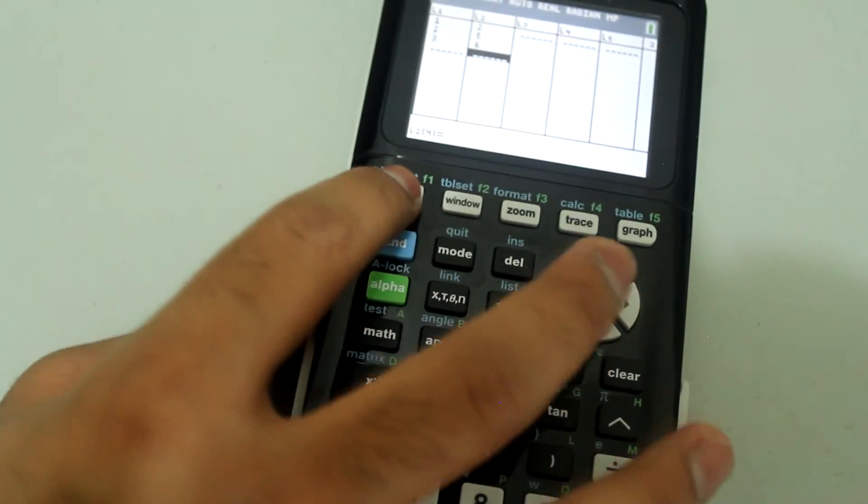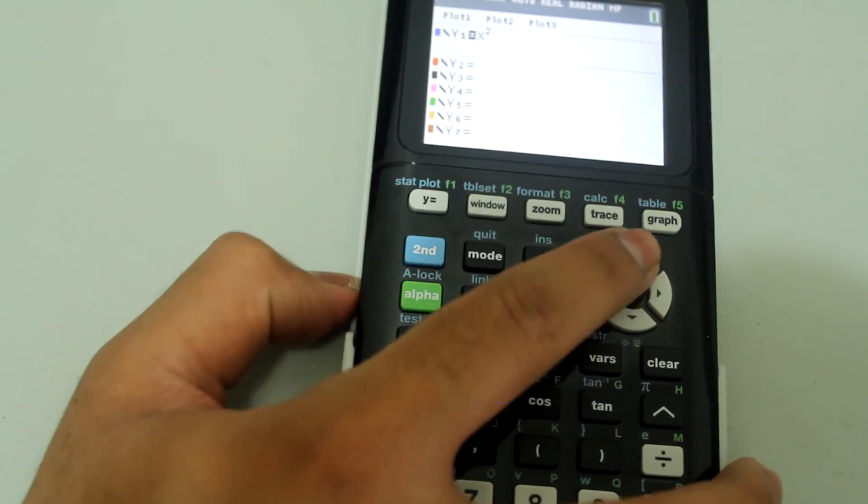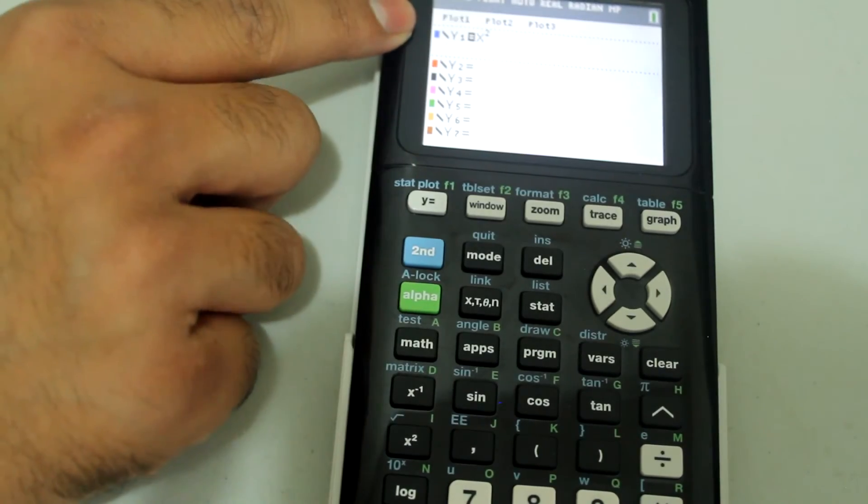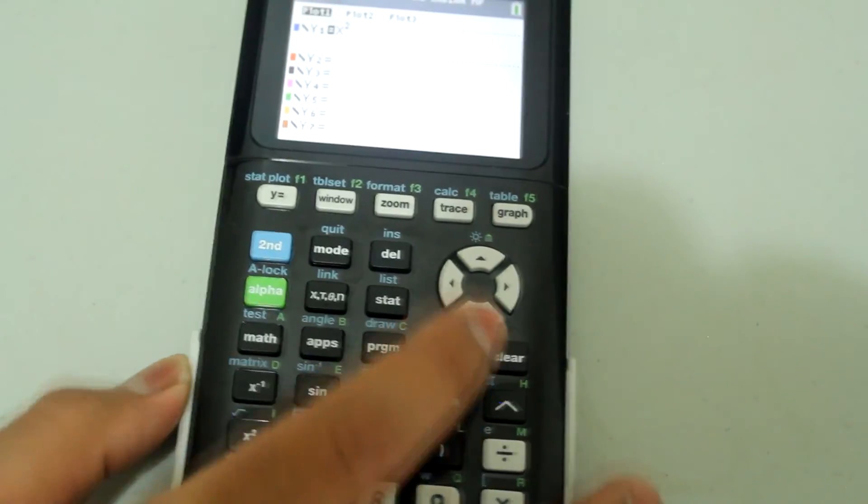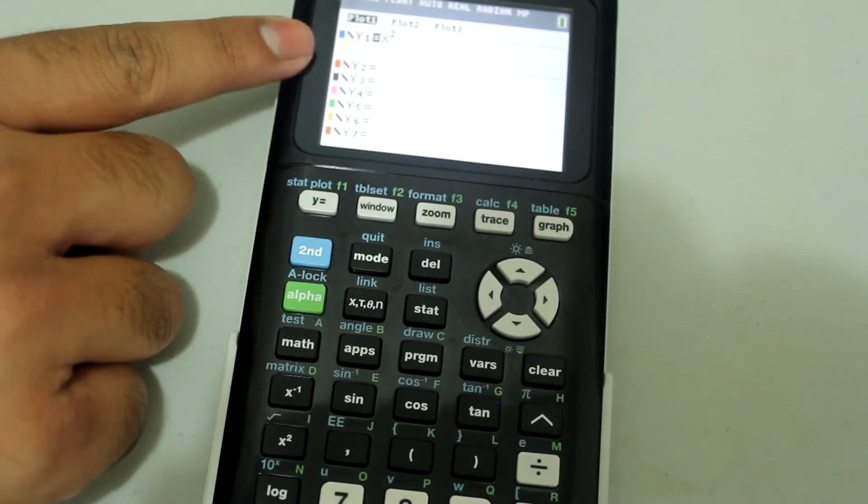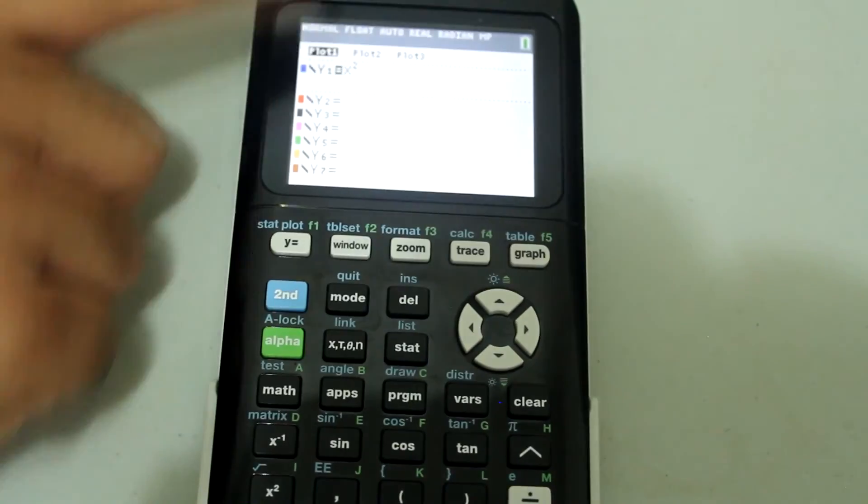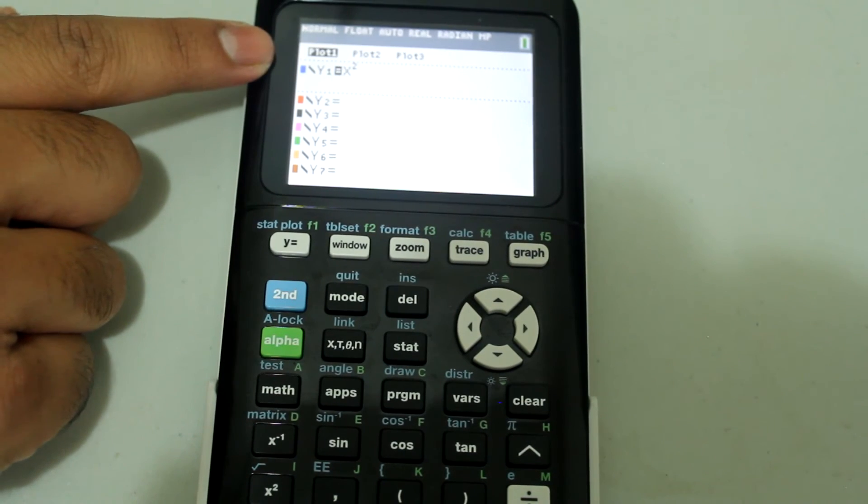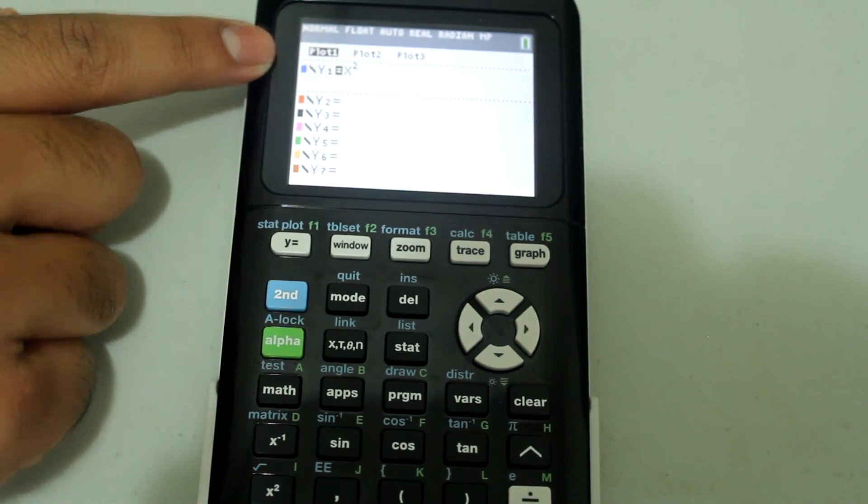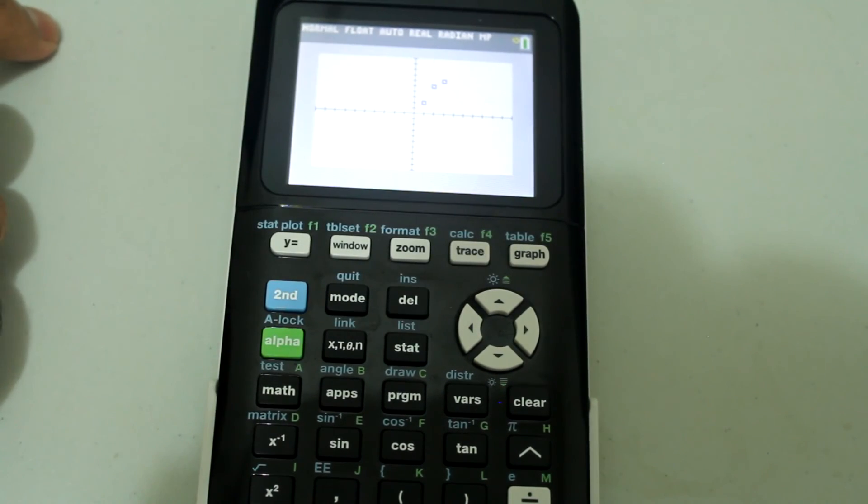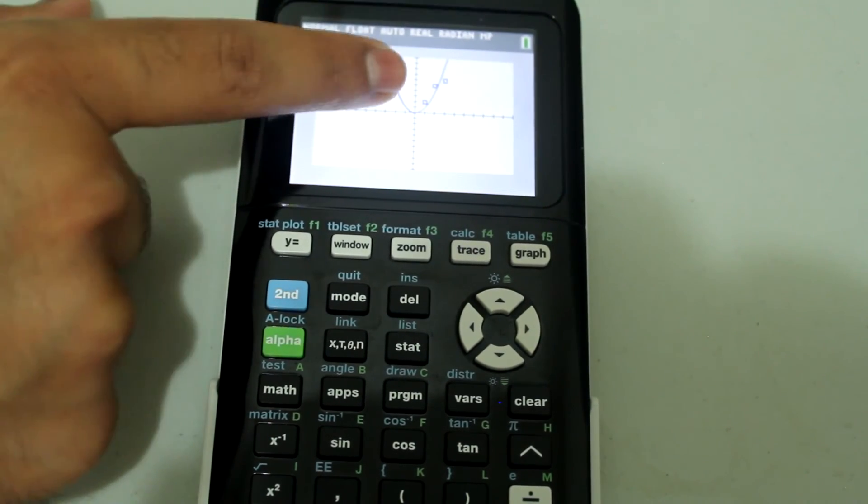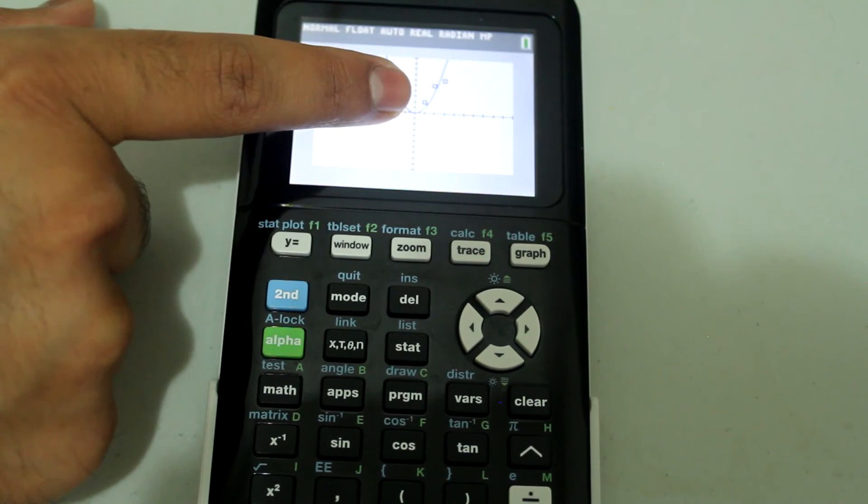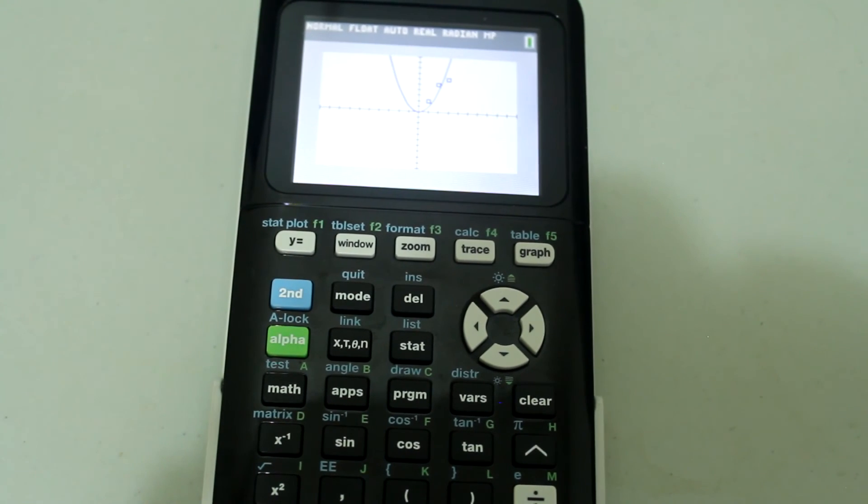And I'll just leave it at that. And now if I go back to y equals, and if I go and turn the plot 1 on again by pressing enter, now you notice that I have y1 equals x squared, and I also have a plot 1 turned on. If I press graph, notice that I get my parabola, but I also get those points from stat 1. So just be careful of those.